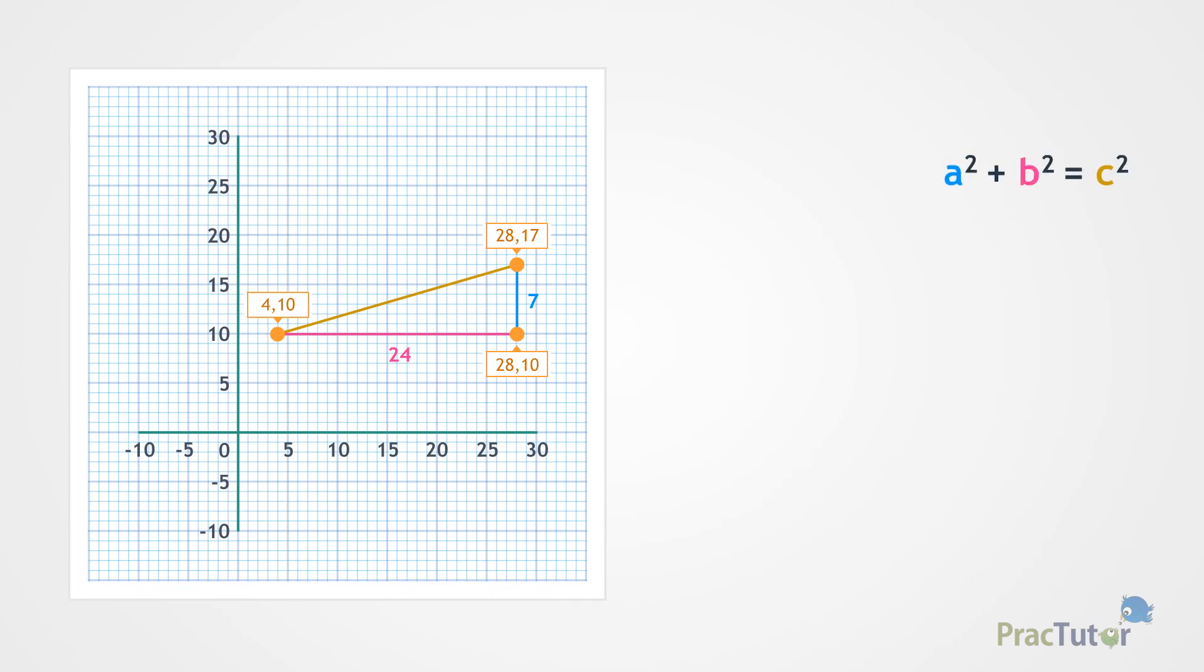The lengths of the sides of the triangle are 24 and 7. We'll use 7 for the a value and 24 for the b value.